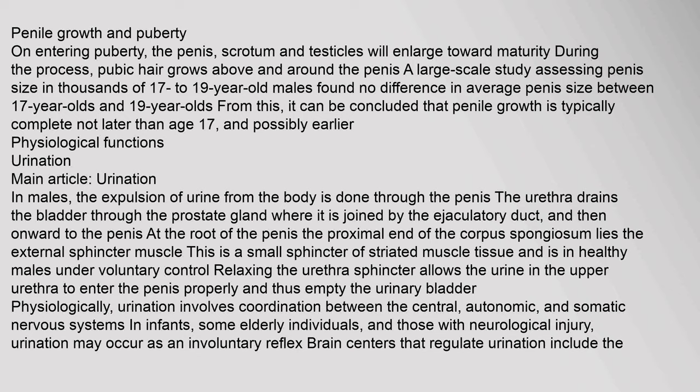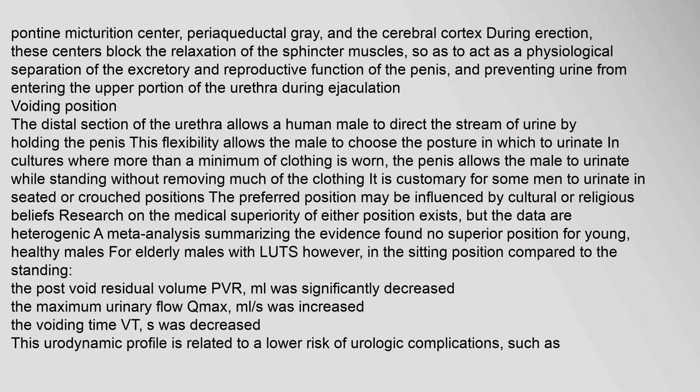Physiologically, urination involves coordination between the central, autonomic, and somatic nervous systems. In infants, some elderly individuals, and those with neurological injury, urination may occur as an involuntary reflex. Brain centers that regulate urination include the pontine micturition center, periaqueductal gray, and the cerebral cortex. During erection, these centers block the relaxation of the sphincter muscles so as to act as a physiological separation of the excretory and reproductive functions of the penis, preventing urine from entering the upper portion of the urethra during ejaculation.